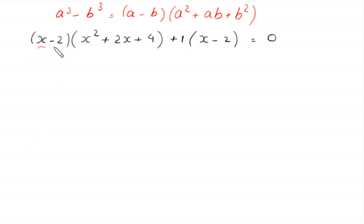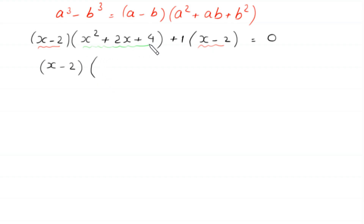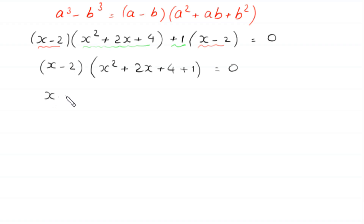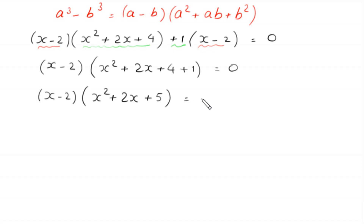Now, as you can see, this expression x minus 2 is a common factor. So we factor out this x minus 2, and in bracket left, x squared plus 2x plus 4 plus 1 is equal to 0. Next, x minus 2 times x squared plus 2x, and this 4 plus 1 becomes plus 5, is equal to 0.